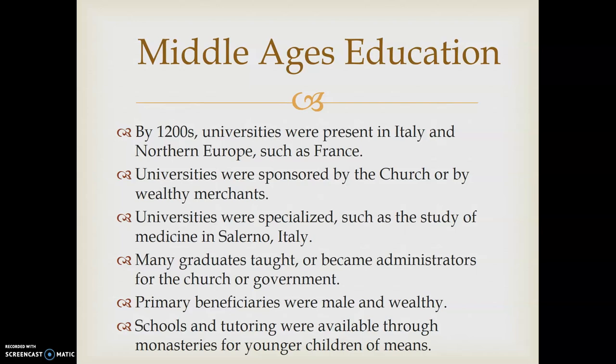As time goes on into the 1200s, there's a movement away from the monastery model. You get universities that are actually in places like England, Italy, and France — Paris, for example. A lot of these universities are in some cases sponsored by new Gothic churches that were starting to be built in the late Middle Ages. Wealthy merchants and the church together created this model of the university. Sometimes students put money together to hire a teacher; sometimes it was the teacher seeking students.